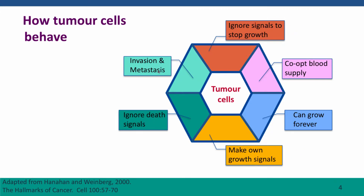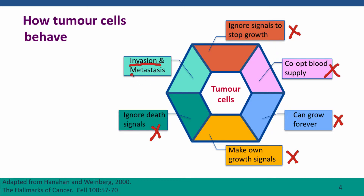Cancer cells, in contrast, do all these things wrong. They ignore signals to stop growing, and very often they even synthesize their own growth signals, so they don't have to pay any attention to signals from other cells. Often they can grow forever. They ignore signals telling them that it's time to die. They send out signals that actually steal the blood supply away from other cells, so the tumor cell gets more than its normal share of oxygen and nutrients. And they wander — depending on the tumor type, they can crawl away into nearby tissues (that's invasion), or they can break loose and start to grow in totally new locations (that's called metastasis).